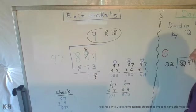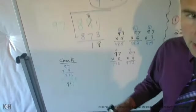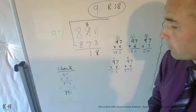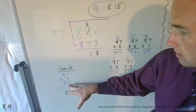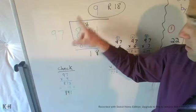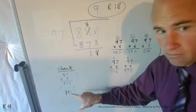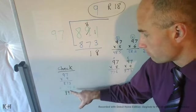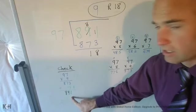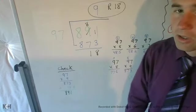When you subtract 873, you get 18 left over. That's your remainder. So 9 remainder 18 is your answer. To check it, I did 97 times 9, which gave me 873, and then I added my remainder of 18 to get 891, which is my original number I started off with.